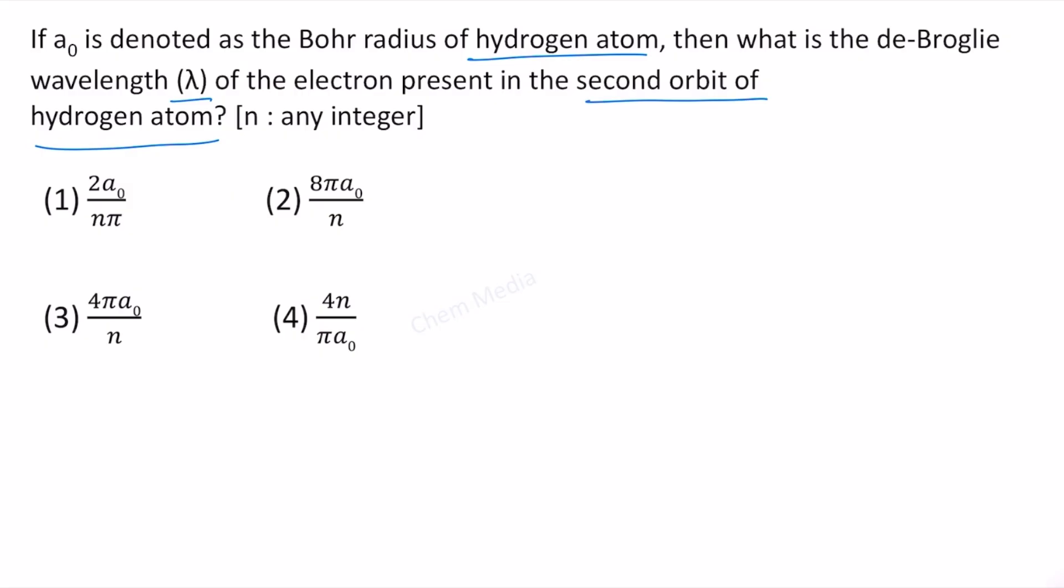We know that Bohr radius for nth orbit is equal to 0.529 times n² divided by z angstrom. Here n is the value of the orbit and z is the atomic number. For hydrogen we know that atomic number is equal to 1.